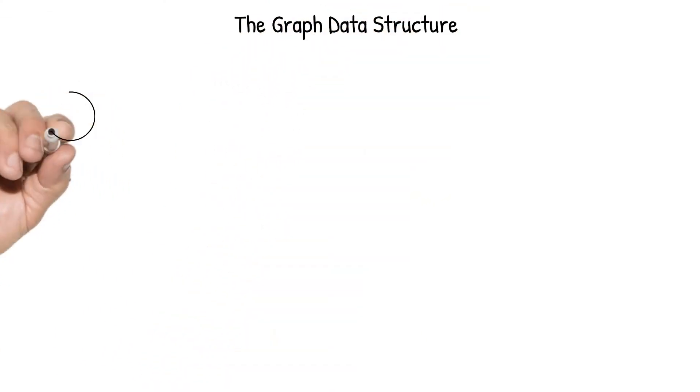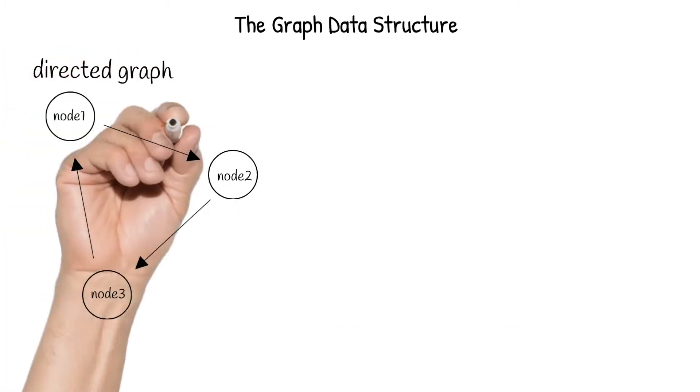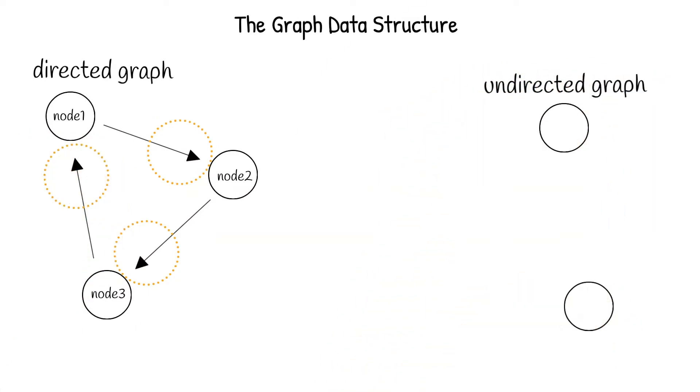We can visualize the graph data structure as a collection of nodes, sometimes called vertexes or vertices, connected by lines that we call edges. Each graph can either be a directed graph, which means that the edges point in a specific direction, or an undirected graph, which means that the edges are bidirectional.